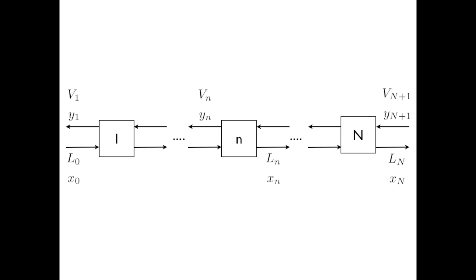At the bottom left, we have L₀, which is the feed flow, and X₀, which is the feed concentration. At the top right, we have V_{N+1}, which is our fresh solvent flow, and Y_{N+1}, which is the concentration of solute in the fresh solvent.